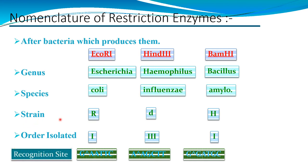The strain name's first letter is retained — capitalized if originally capital, or lowercase if originally lowercase. For example, in HindIII the strain was 'd' (lowercase), so it was retained as lowercase in the name. The order of isolation is indicated by a Roman numeral; EcoRI was the first enzyme isolated from Escherichia coli, so the order is I.